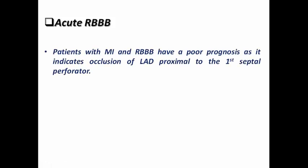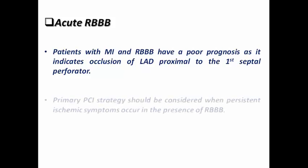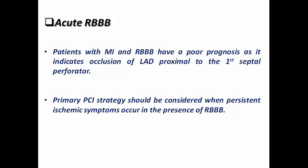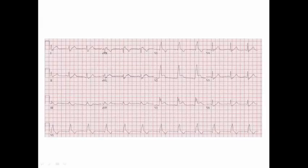What about acute right bundle branch block — is it the same as left bundle? Patients with myocardial infarction and right bundle branch block also have poor prognosis, because it indicates occlusion of the LAD proximal to the septal perforators which supply the right bundle branch. Primary PCI strategy should be considered with ischemic symptoms in the presence of right bundle branch block. In most cases you would see ST-elevation with right bundle. In this ECG example, there is frank ST-elevation in V2 and V3 with a prominent R wave in V1-V3 suggestive of right bundle branch block — this patient has anteroseptal STEMI with acute right bundle branch block, a high-risk sign requiring urgent catheterization.